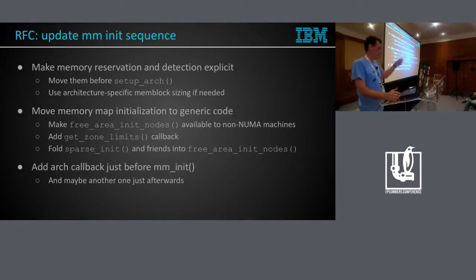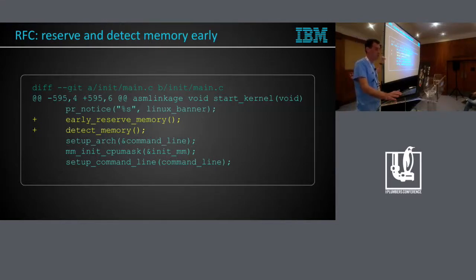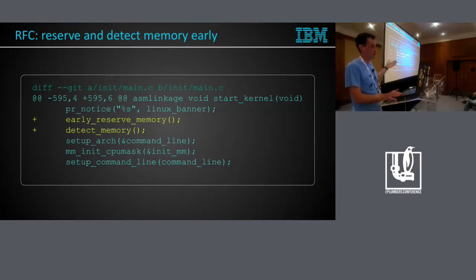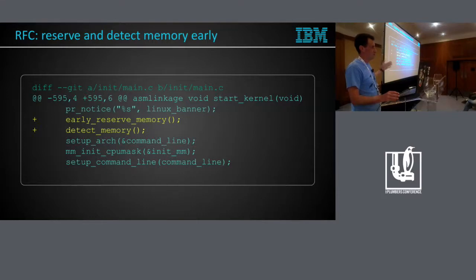For things architectures do in mem_init that are not really memory init, we can add an explicit callback. The flow would be: early_reserve_memory should come before detect_memory, because detect_memory might start allocating memblock and could step on reserved areas. This is pretty much what already happens on DT architectures, especially those that call fdt_init from their assembly code — by the time setup_arch starts, the memory nodes of the device tree are already parsed and memblock is initially set up.